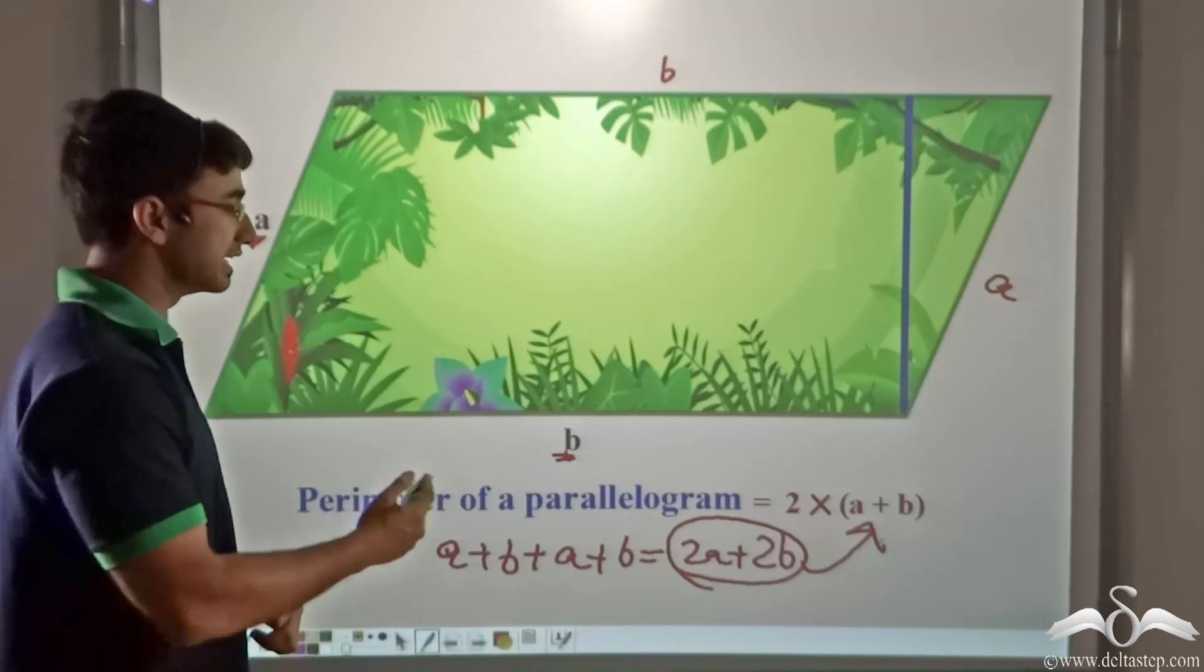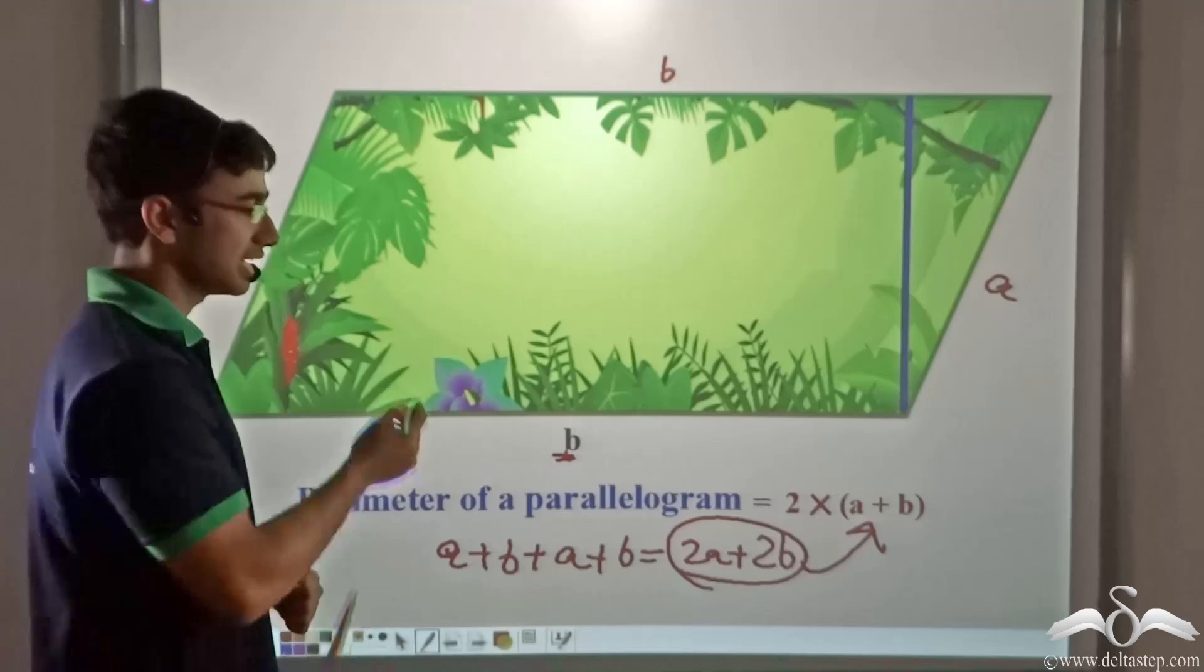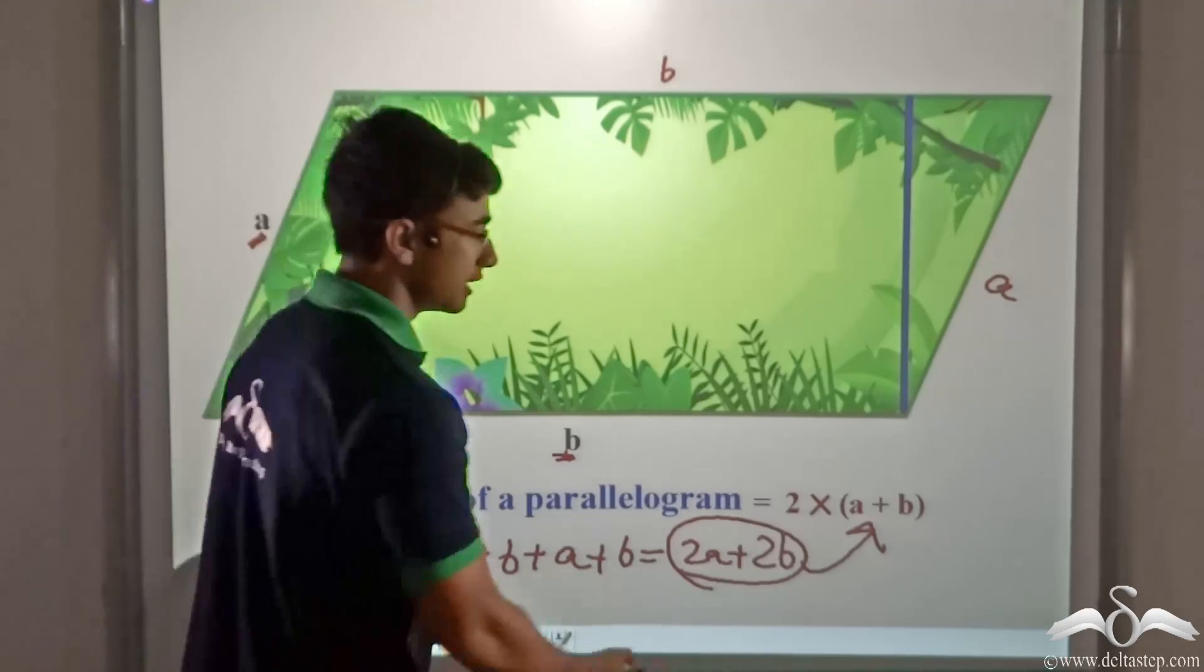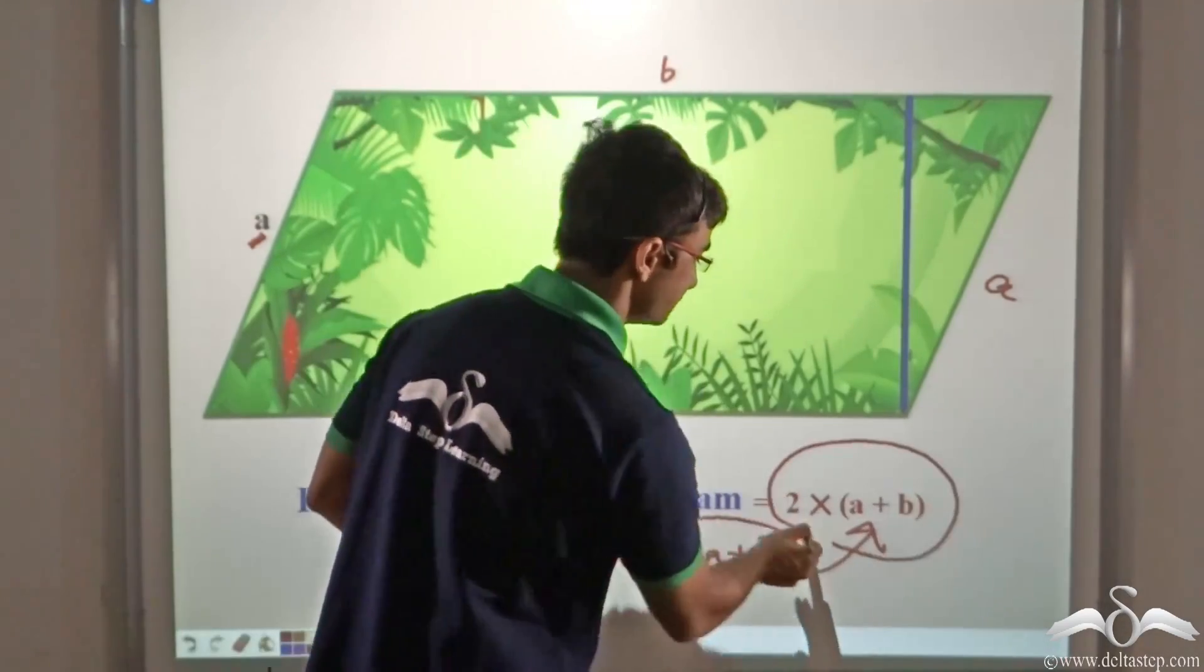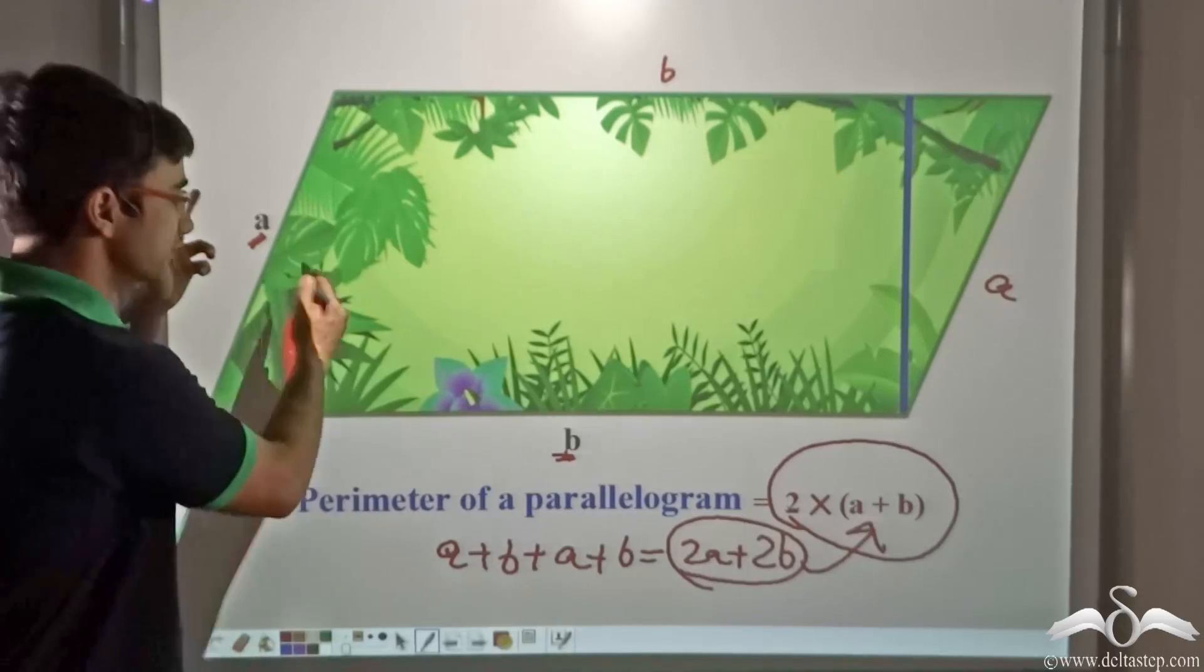So for a parallelogram, given two particular sides, the length of two adjacent sides, we can get the perimeter as 2 multiplied by A plus B. That is these two sides.